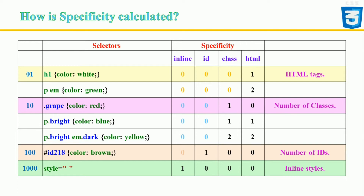To calculate specificity: start at 0, add 100 for each ID value, add 10 for each class value, pseudo-class, or attribute selector, and add 1 for each element selector or pseudo-element. A simple h1 selector has a specificity of 1; a class selector has a specificity of 10; an ID selector has 100; and inline styles get 1000 and are always given the highest priority.